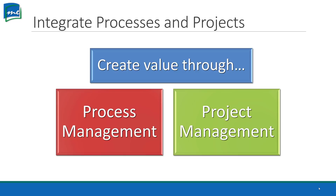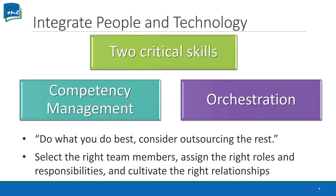We need to integrate people and technology — two critical skills you'll develop as you advance in business. We need to manage our competencies and orchestrate our people. Do what you do best and consider outsourcing everything else. Select the right team members, assign the right roles and responsibilities, and cultivate the right relationships. Someone who seems like a poor fit might become the best employee a company has ever seen once placed in the right role.